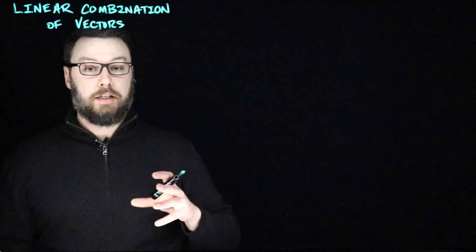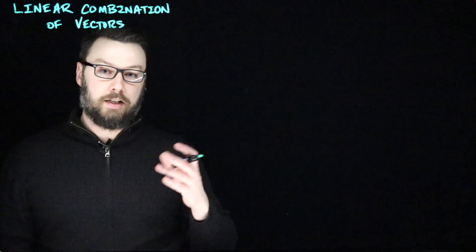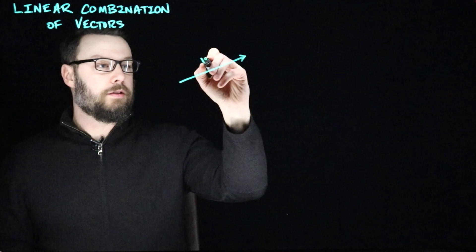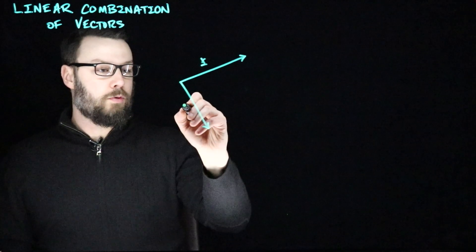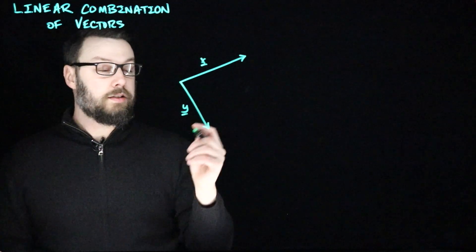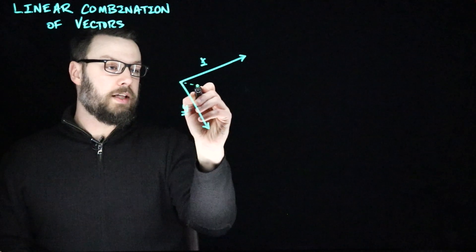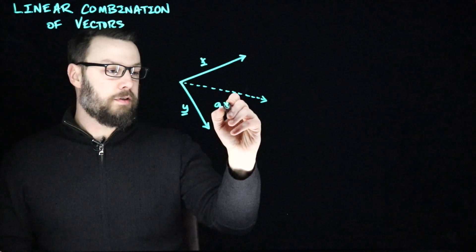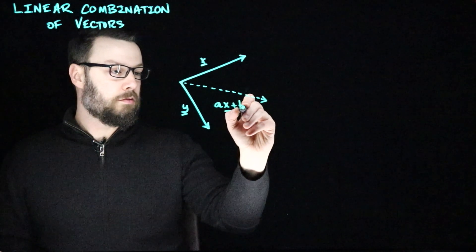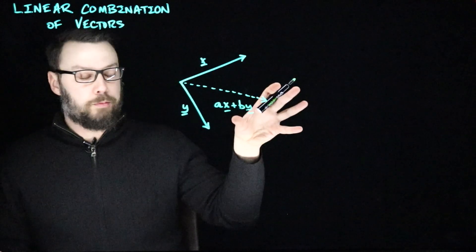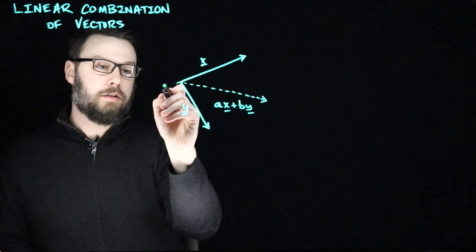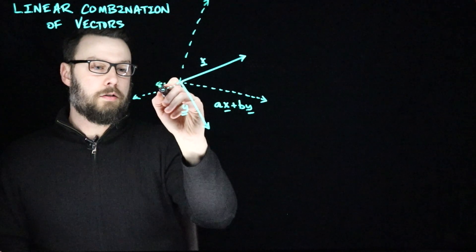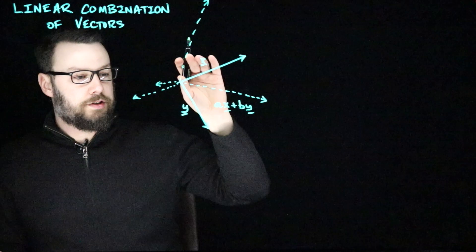The idea of a linear combination of vectors is that we scale vectors and then add them together, and we can get some intuition for this in 2D using directed line segments. Let's imagine that we have a vector x and another vector y. These don't have to be perpendicular, but we could think about how we might create vectors that are blends of them — a little bit of x and a little bit of y. If a and b are positive then maybe this is pointing in the same direction, but they could also be negative, making it longer or shorter. The point is that we're talking about linear combinations of x and y.